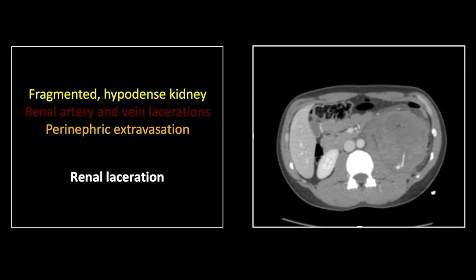Yet more inferiorly, you can see an anteriorly displaced, devascularized, hypodense left inferior kidney. Essentially, this is a renal transection, both through the left renal vessels, but also through the mid-portion of the renal parenchyma.